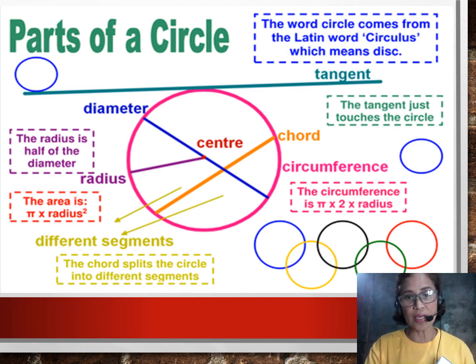As you can see, the word circle comes from the Latin word circulus, which means a disk. Now, these are the things that I'm going to discuss with you: tangent, diameter, center, radius, chord, and so on.